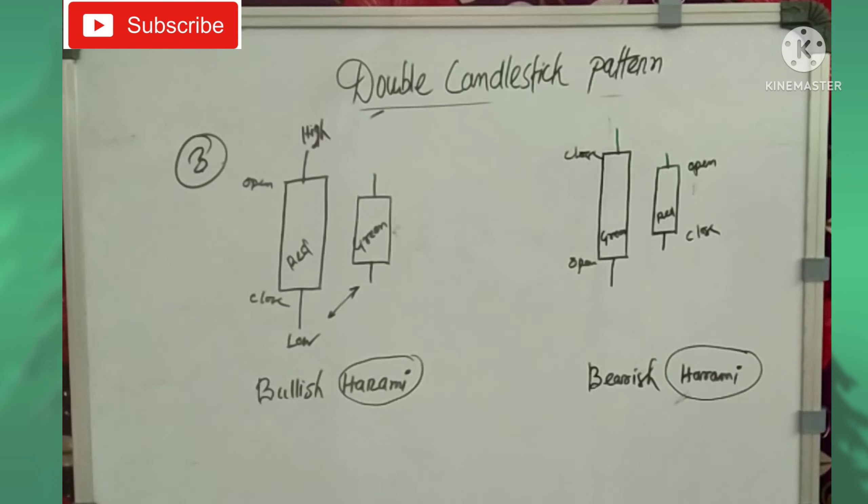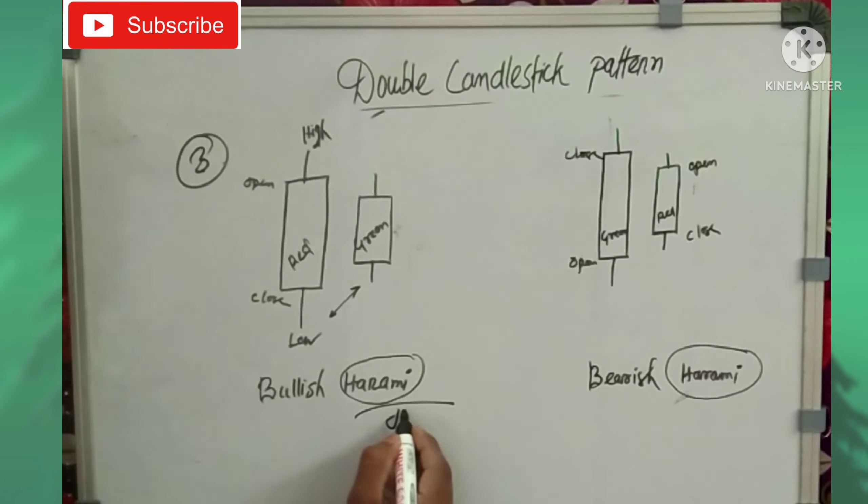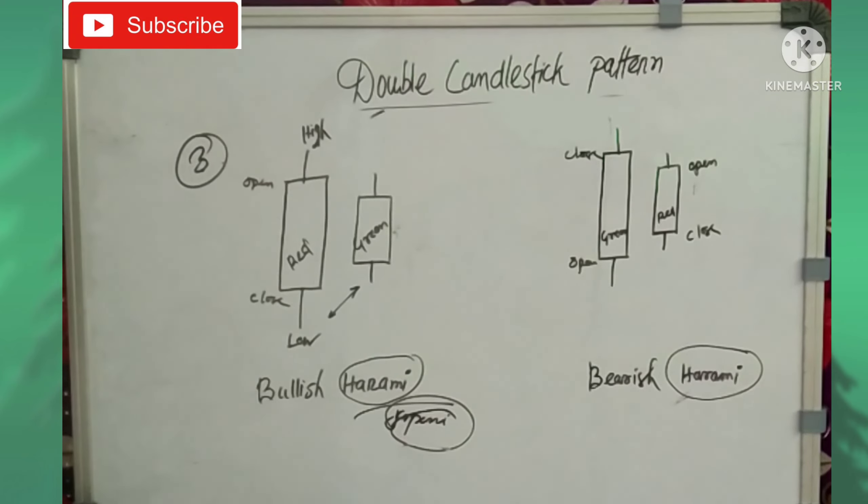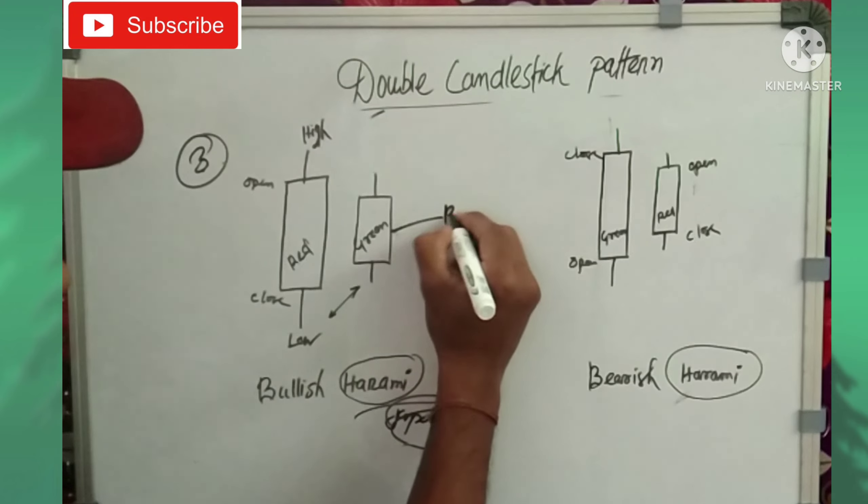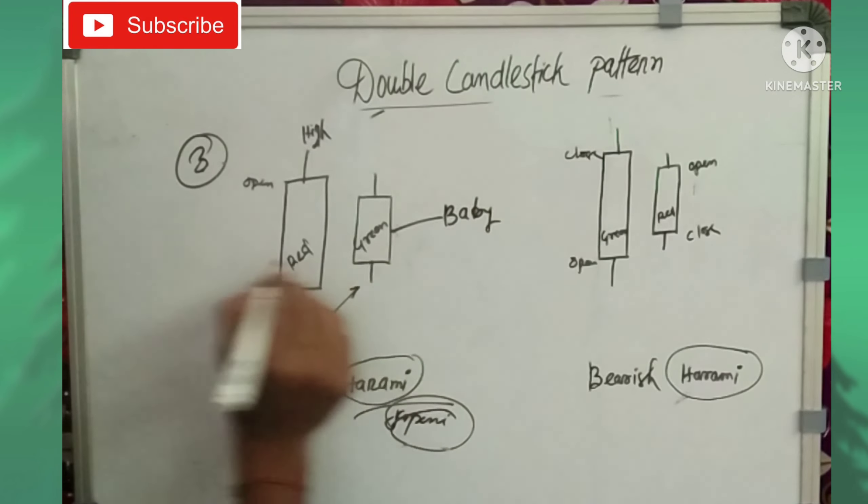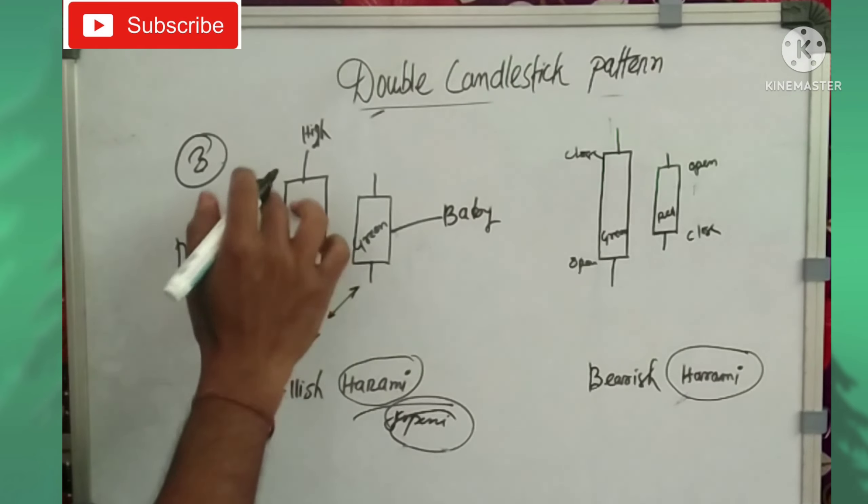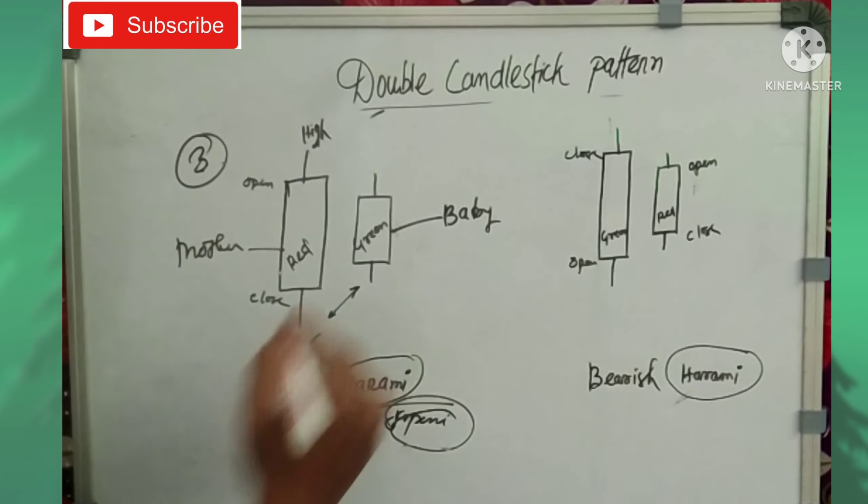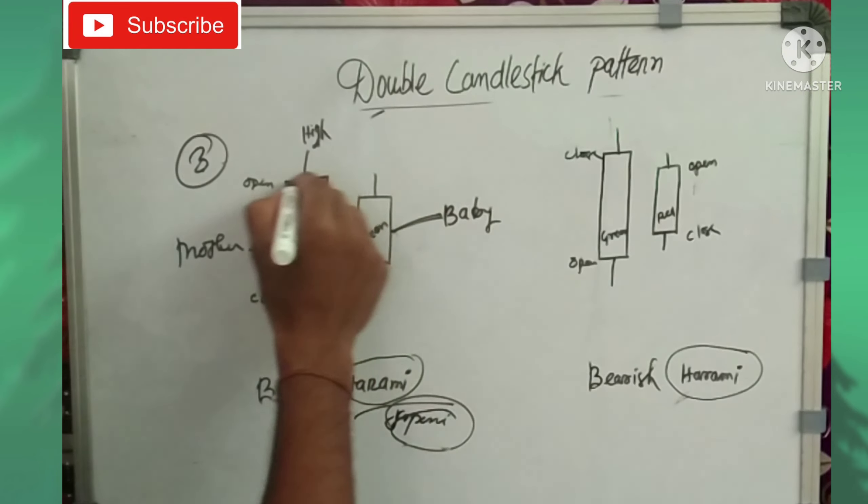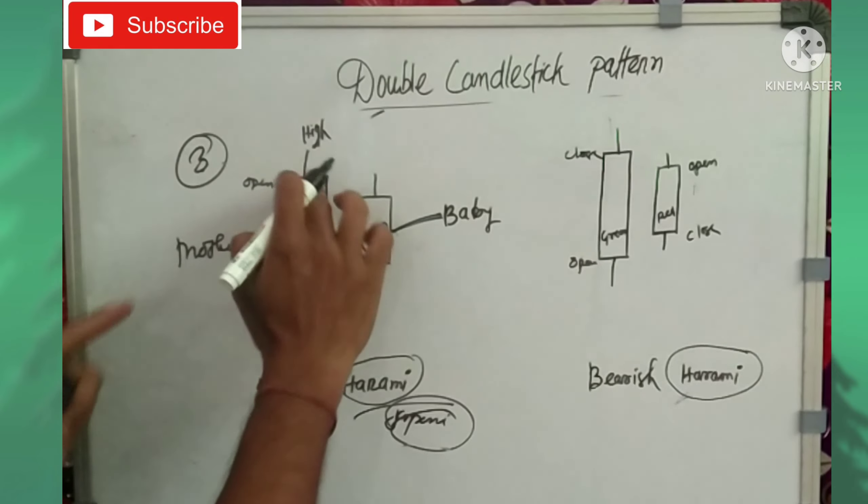The third pattern is bullish harami and bearish harami. In bullish harami, after a large red candle, a small green candle forms inside. Harami means pregnant lady in Japanese - the small candle is like a baby inside the mother candle.